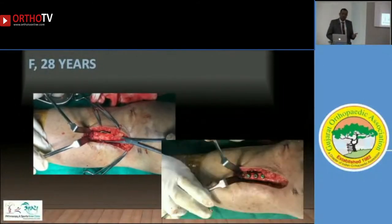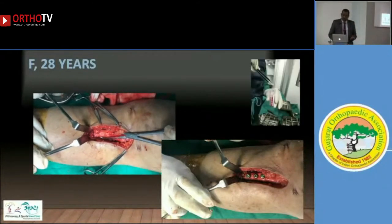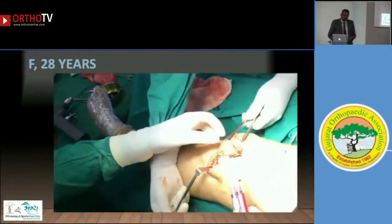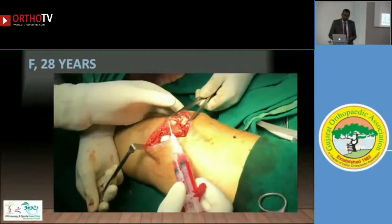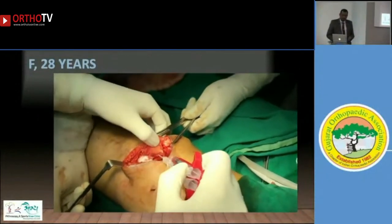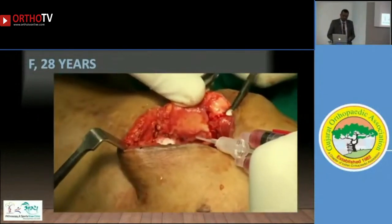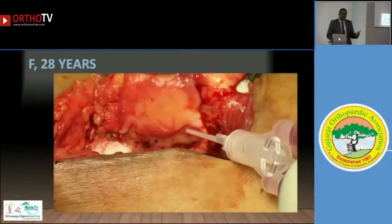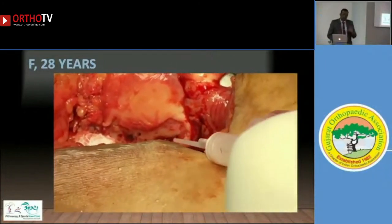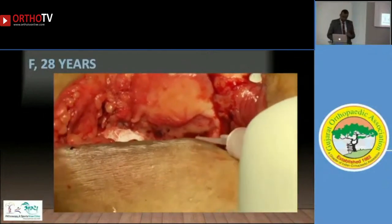So I went in again and performed a tibial tuberosity transfer — distalization — and fixed it. At the same time, I decided to address the cartilage problem as well. I took a cartilage biopsy, and six weeks later we performed ACI, implanting chondrocytes on the medial patellar facet cartilage defect. So distalization and ACI were done simultaneously, with MPFL reconstruction having already been done in the first surgery.